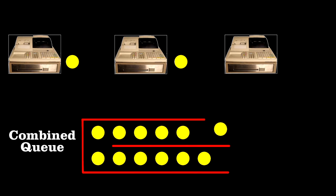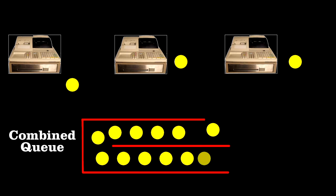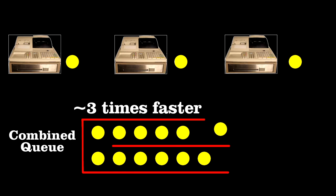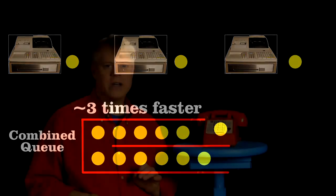Instead, they should make a single line feed multiple cashiers. For three cashiers, it's about three times faster than having a line for each cashier.